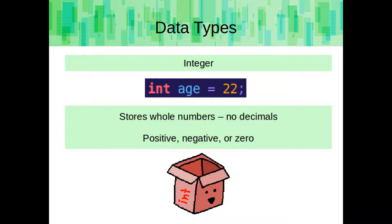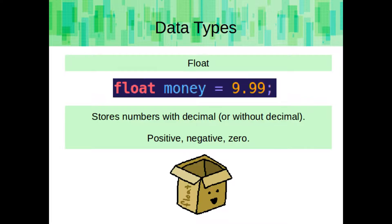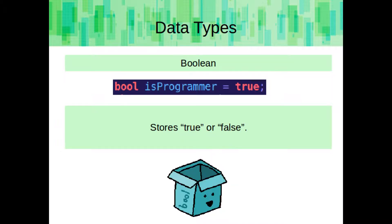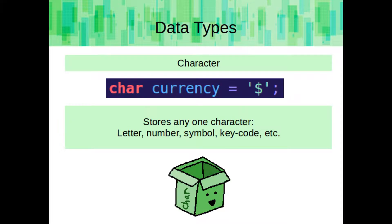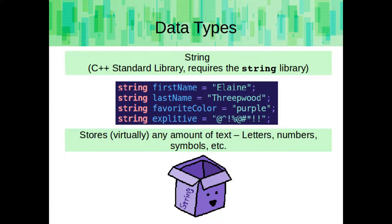Integers are whole numbers — no decimal points, no fractions. They can be positive, negative, or zero. A float is a number that can contain a decimal, but doesn't have to. It can be positive, negative, or zero. A boolean stores true or false. A character stores a single character, such as one letter, one number, a symbol, or a keycode. And a string can store virtually any amount of text — letters, numbers, symbols, etc.